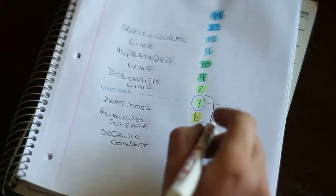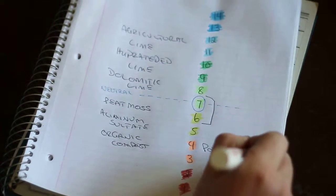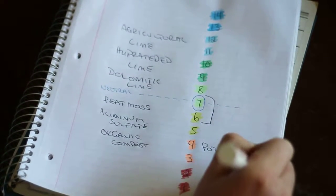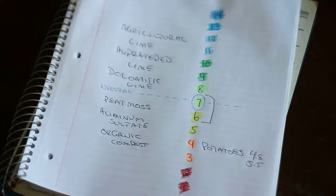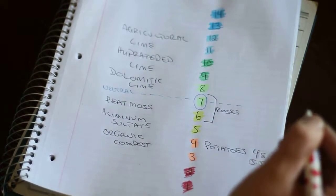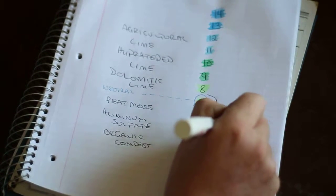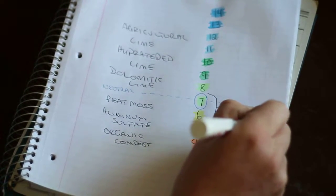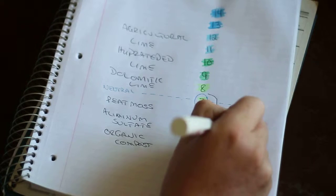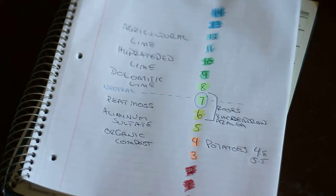Just for example, potatoes are going to be about a 4.8 to a 5.5 so way more on the acidic side than most things. Roses are going to fall right in that sort of sweet zone. Rhododendron and azalea are going to be a little bit less but not too much, in around that 5.5 to 6 range.